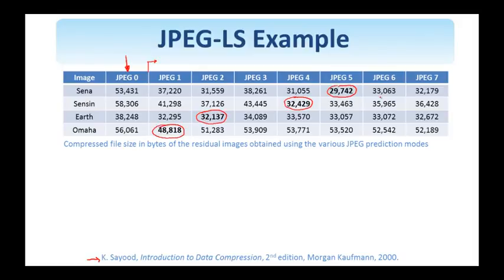What is shown in bold is the best encoding achieved in each case. And clearly, which prediction method performs best depends on the type of the image. So with this image SENA, the fifth prediction mode gave the best performance, and we see that this is about 45% or so fewer bits than when the intensities were directly encoded using arithmetic encoding.